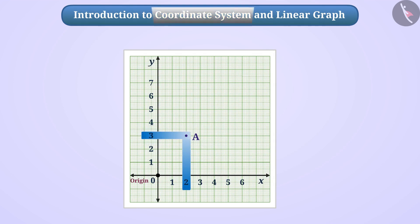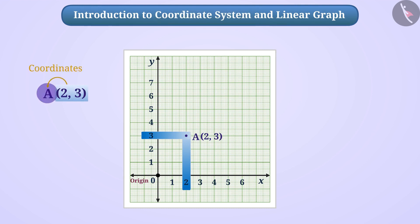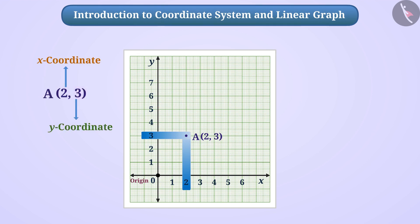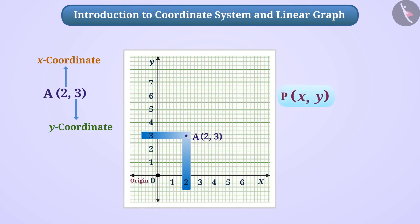According to the coordinate system, we represent the location of point A as (2, 3). We say that is the coordinate of point A. It has 2 as the x-coordinate of point A and 3 as the y-coordinate of point A. Similarly, the position of point B on the graph can be expressed in the form of x-coordinates and y-coordinates in this way.